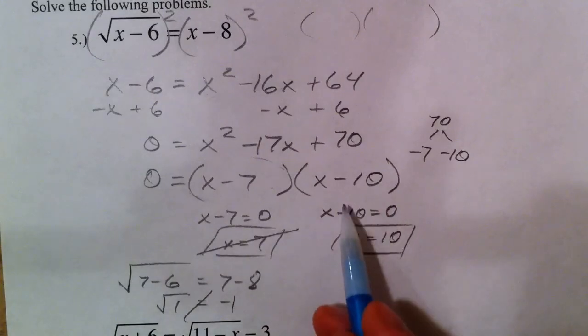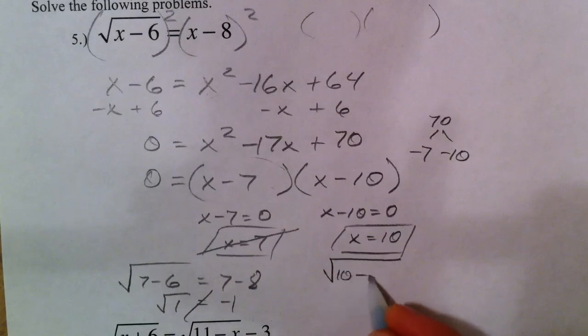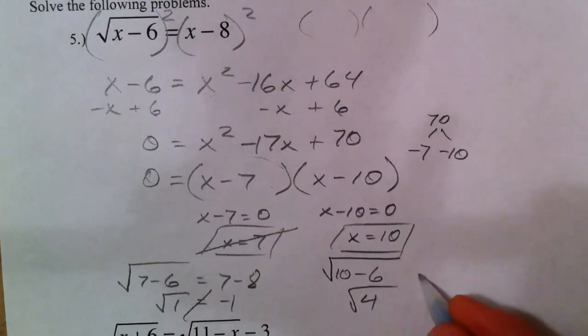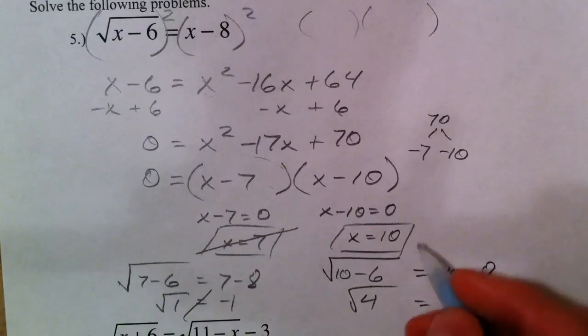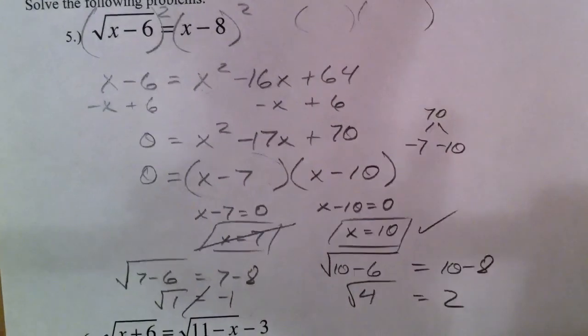10. When we plug in 10. 10 minus 6 is 4. Square root of 4 is 2. And 10 minus 8 is 2. And so, that checks out. And so, we're all set.